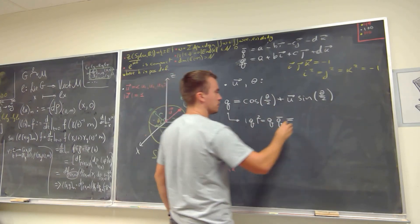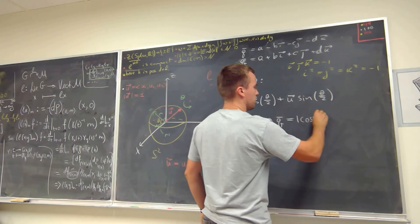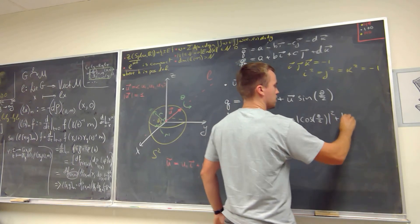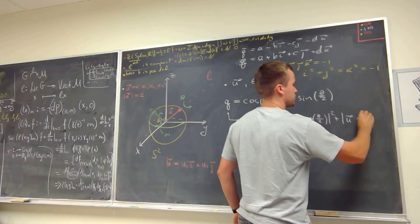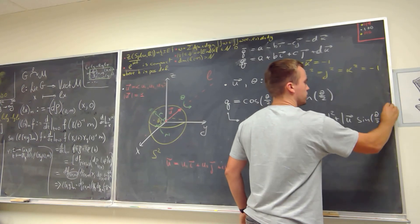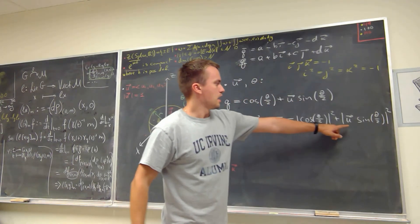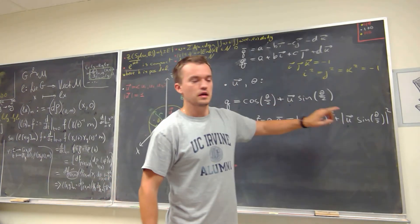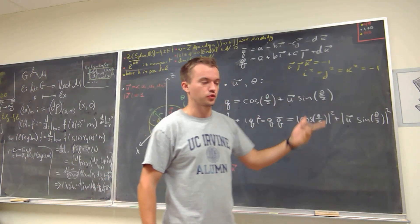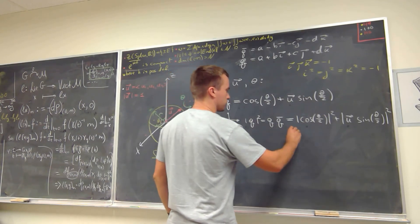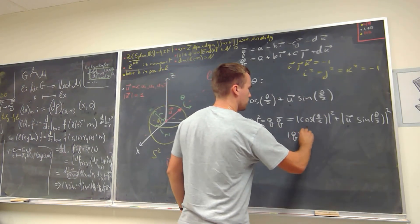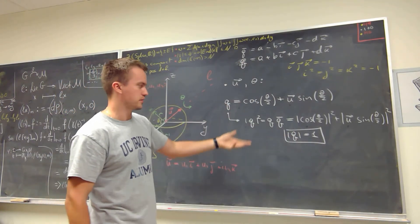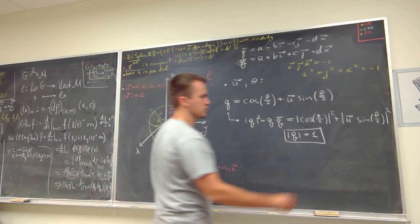Then you're going to obtain magnitude of cosine theta over two squared plus magnitude of u times magnitude of sine of theta over two squared. And since the magnitude of u is a unit quaternion, it's going to be equal to one. Then I'm going to get cosine squared plus sine squared, which is also going to be equal to one. So that's why the magnitude of this quaternion is going to be equal to one.